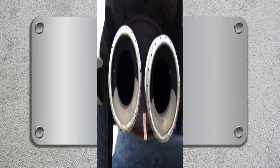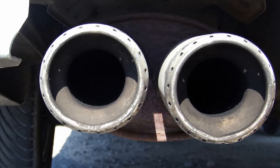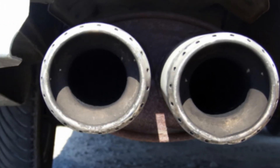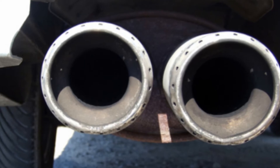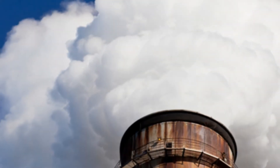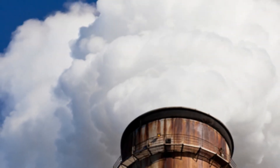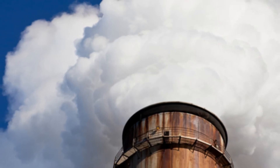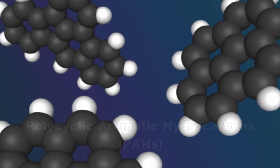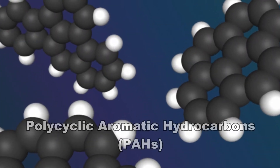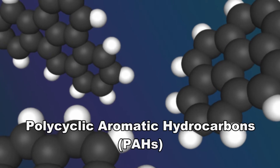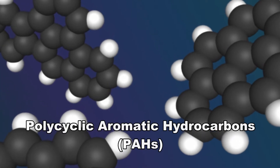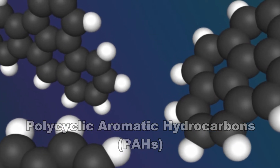Carbon black can also form as an air polluting particle when fuels are not completely burned. These carbon black particles are often coated with other chemicals, making them more hazardous than commercially produced pure carbon black. The particle coatings may include polycyclic aromatic hydrocarbons, also known as PAHs.